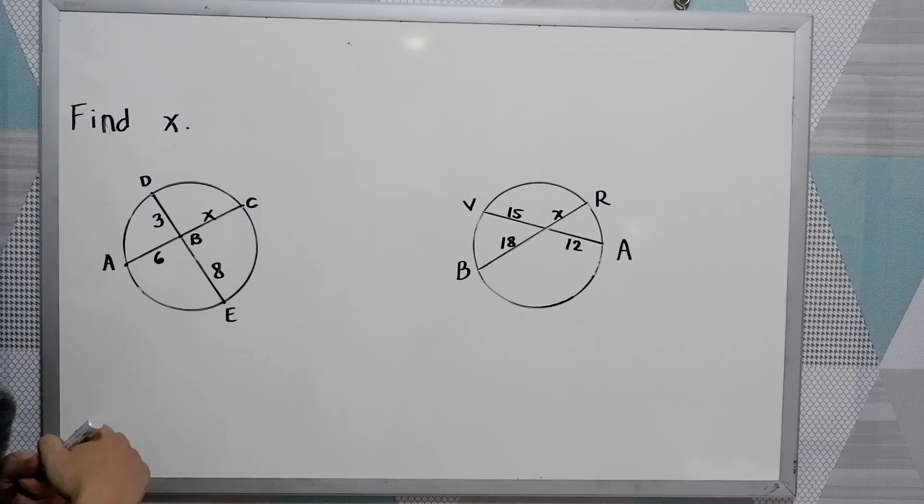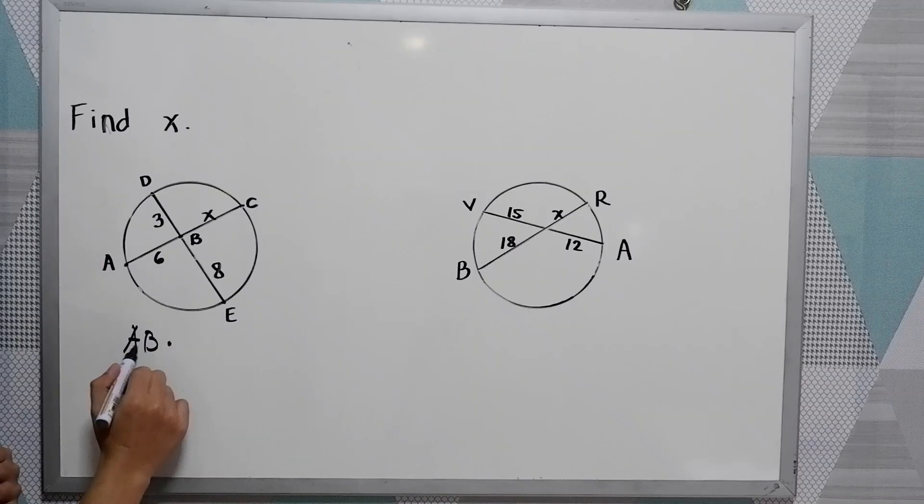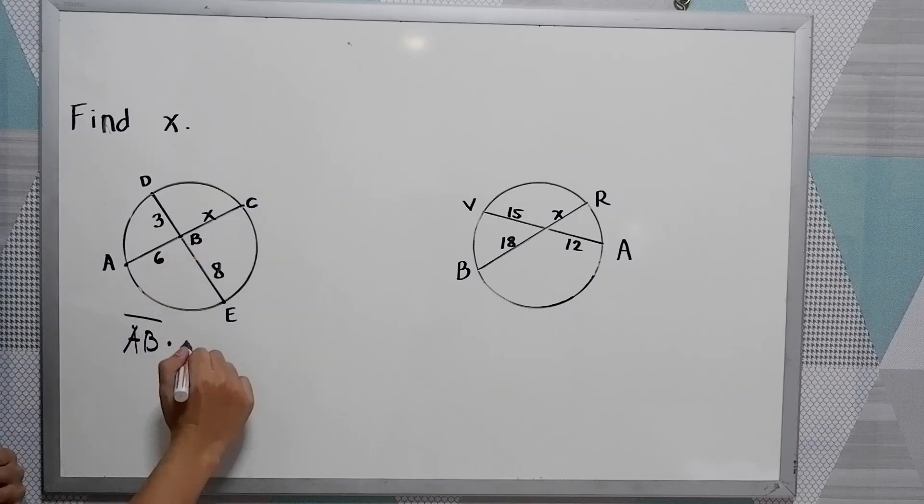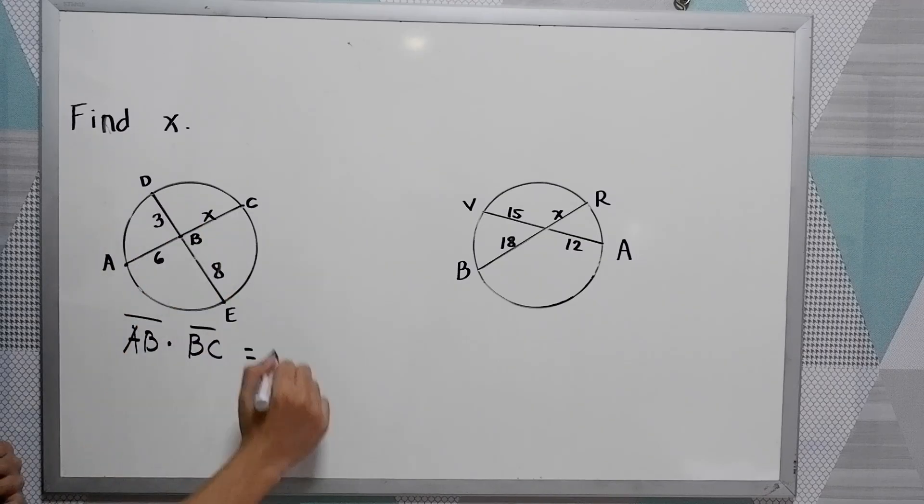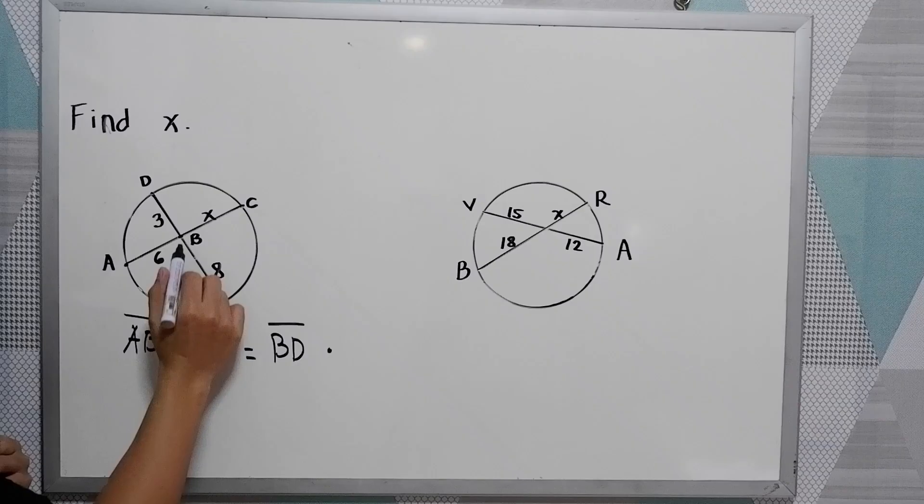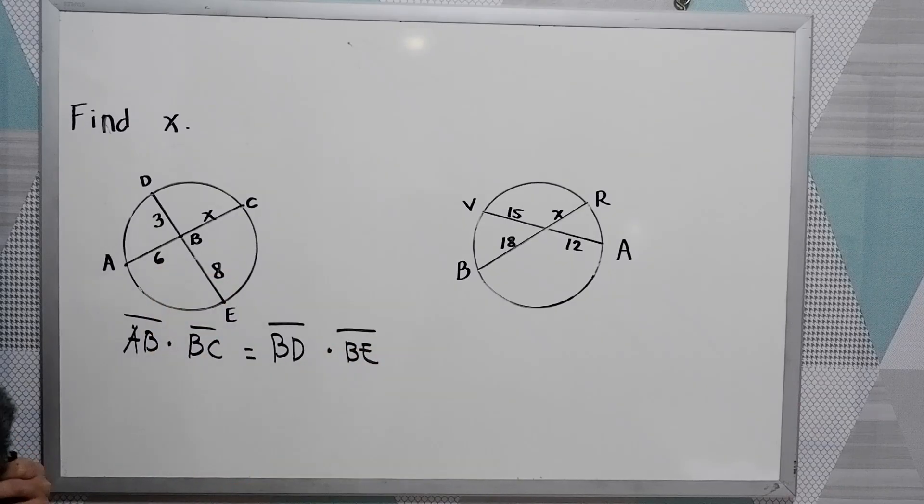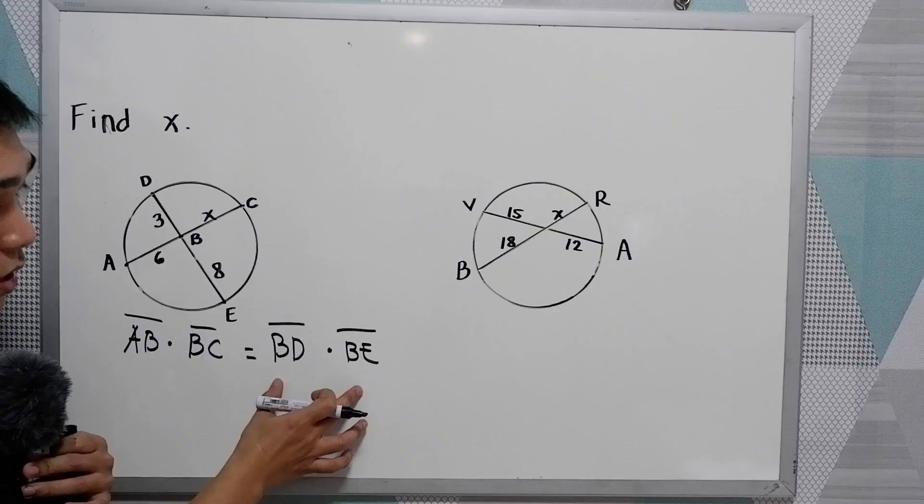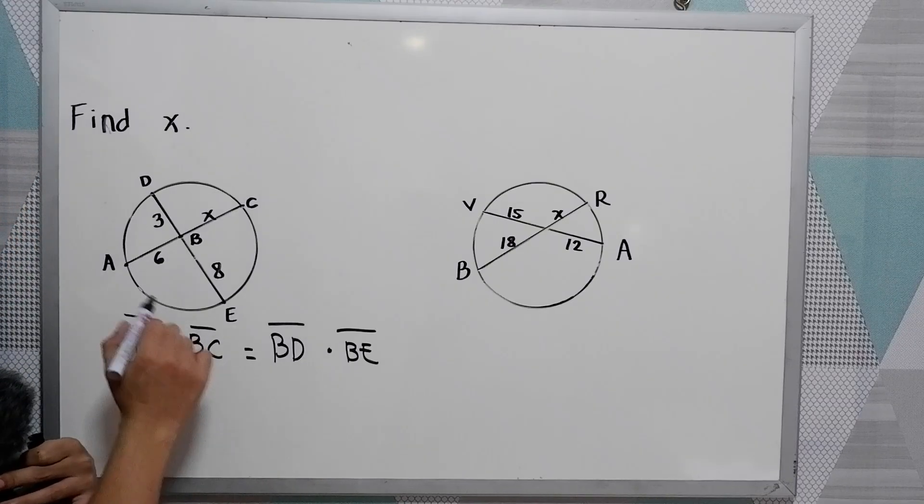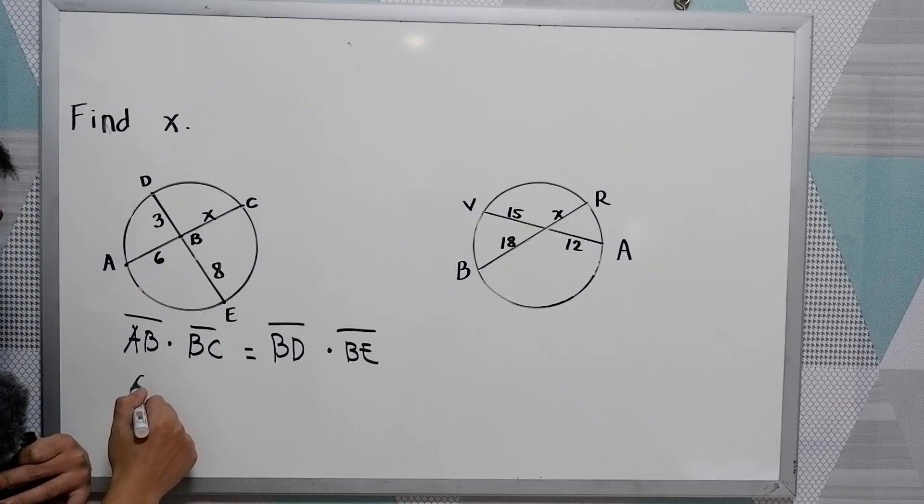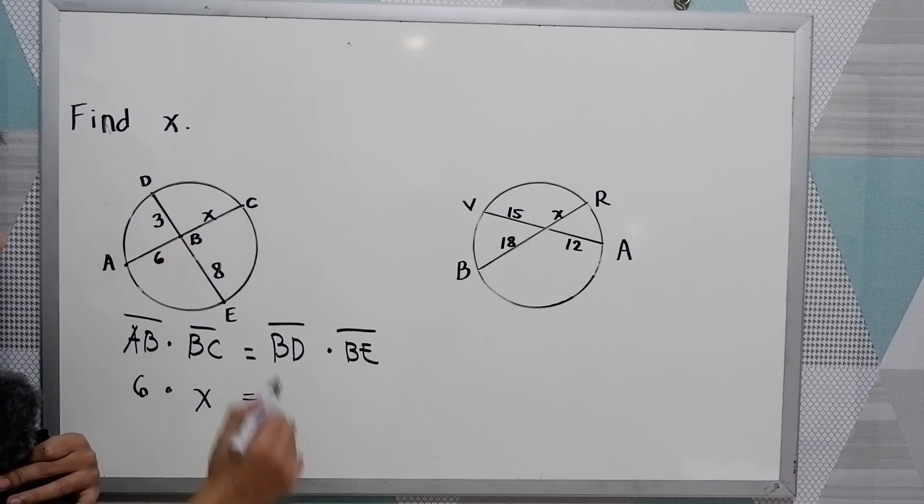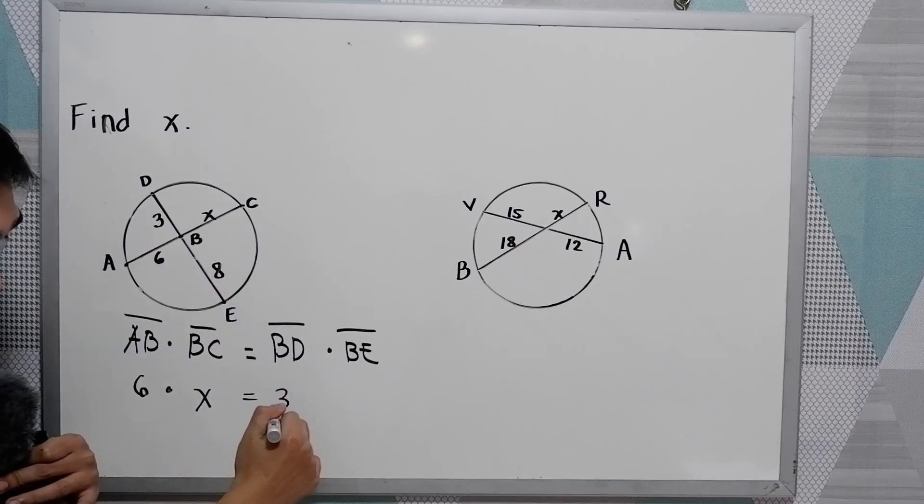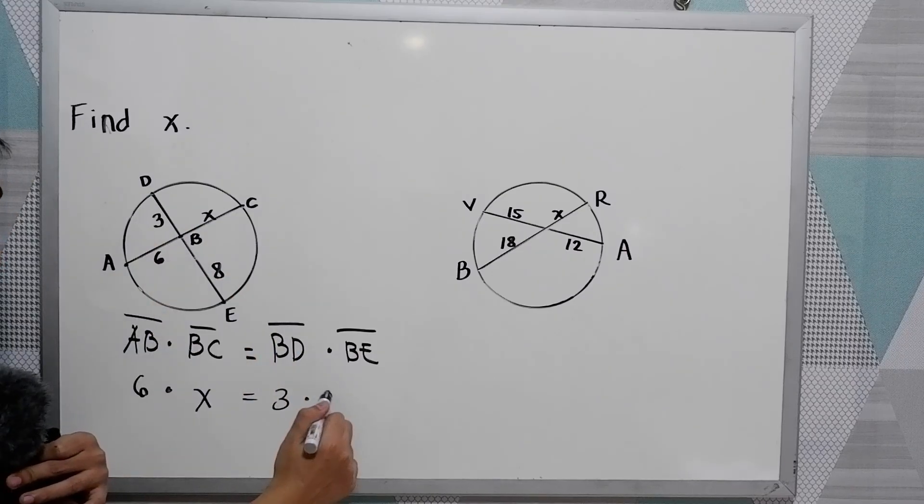Solving for X, we have the theorem, AB times BC is equal to BD times BE. This is our formula according to our theorem. Substitute: AB, the measure is 6 times BC, that is X, is equal to BD, which is 3, times BE, which is 8.